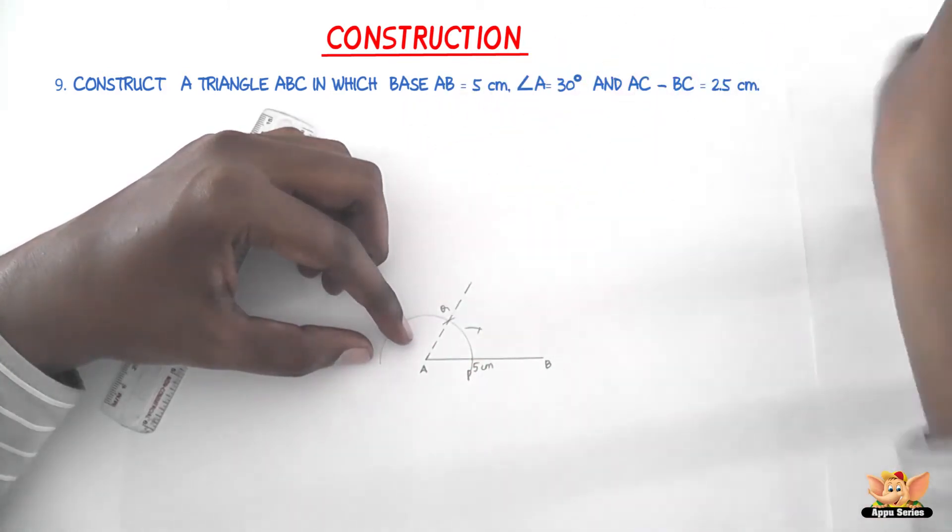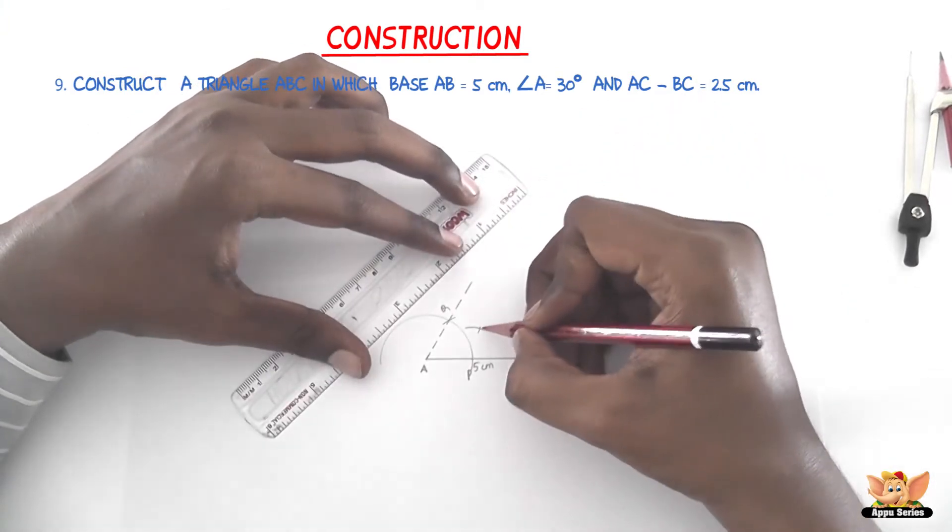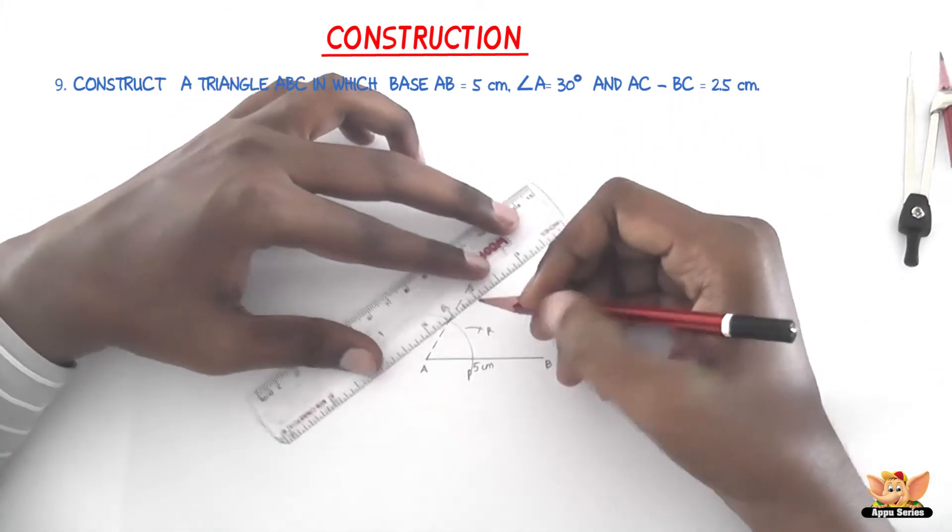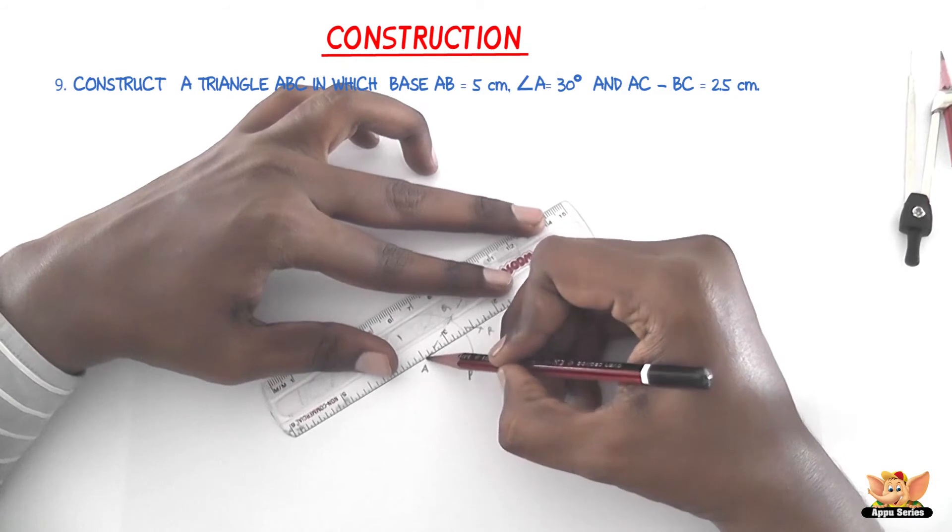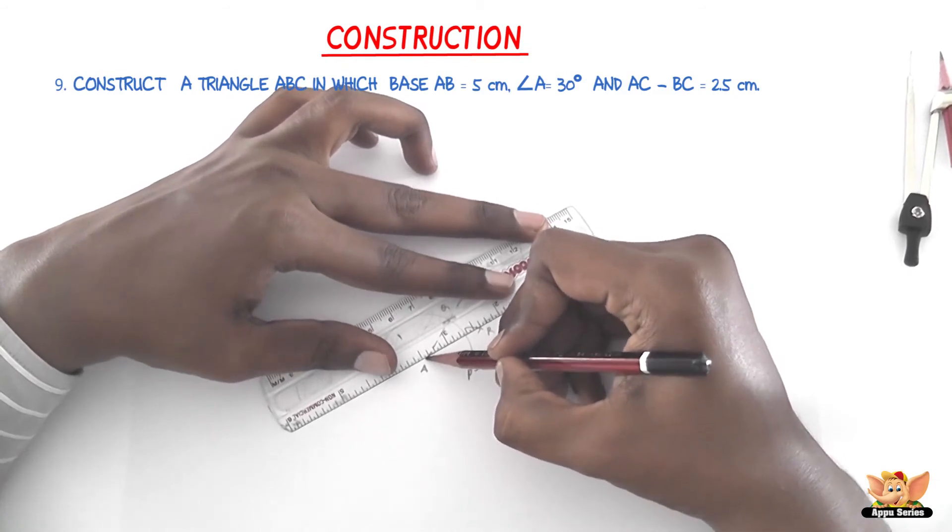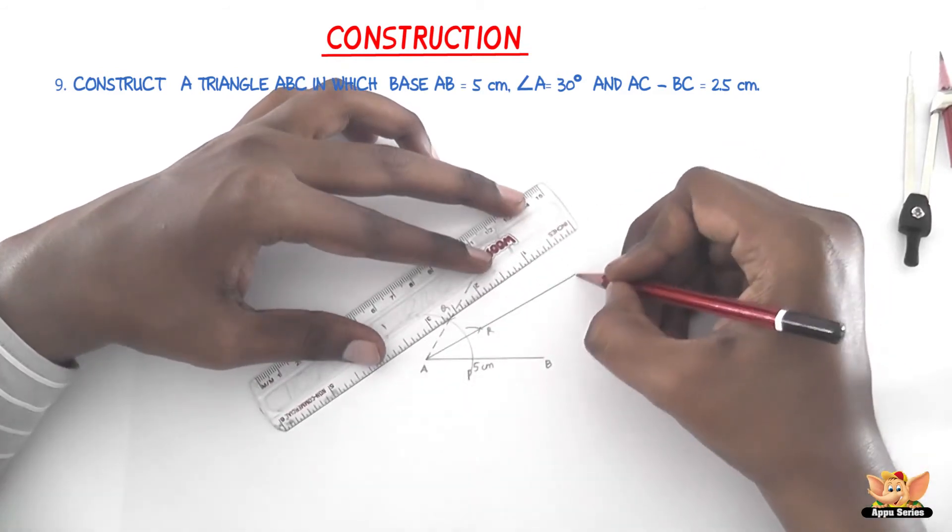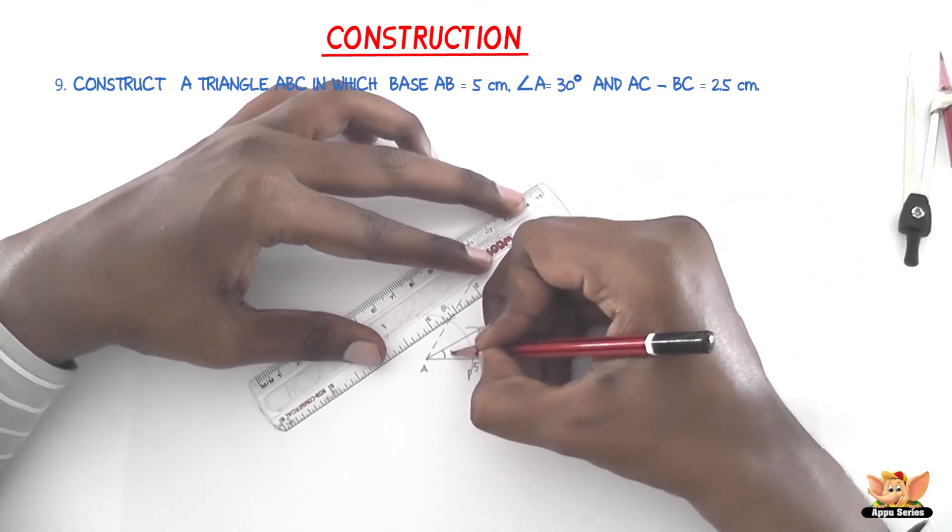There we go. Now let us name this as R. Now join AR and produce it to X. This is the angle 30 degrees.